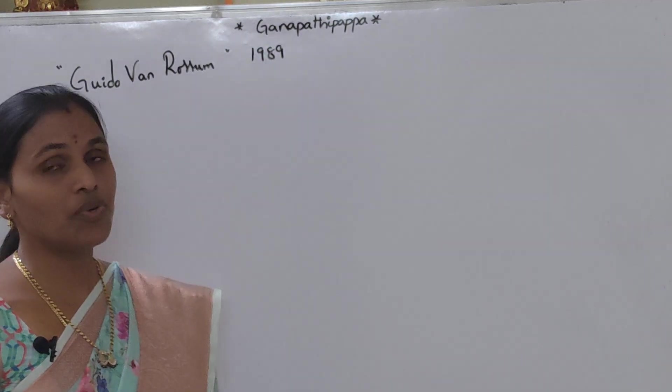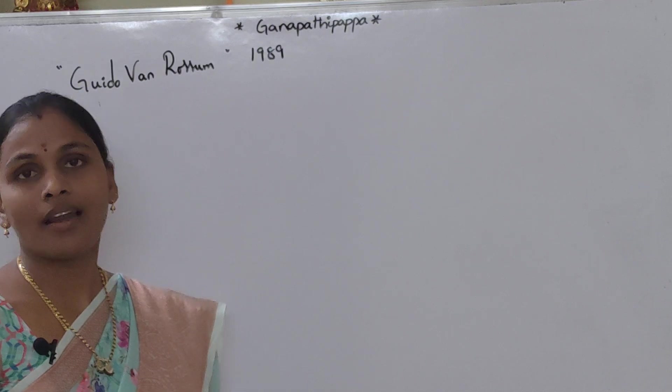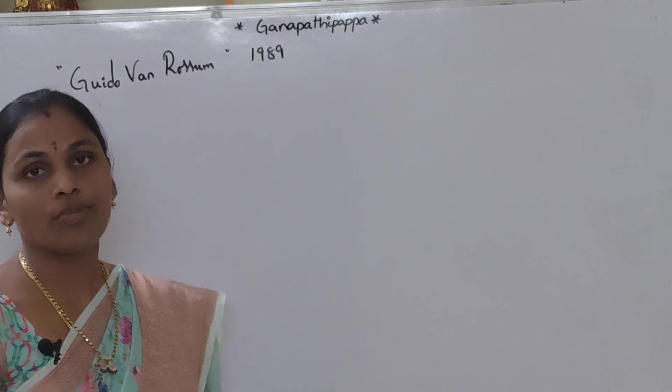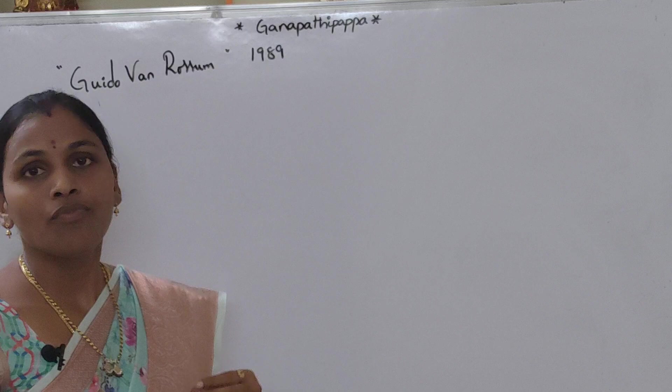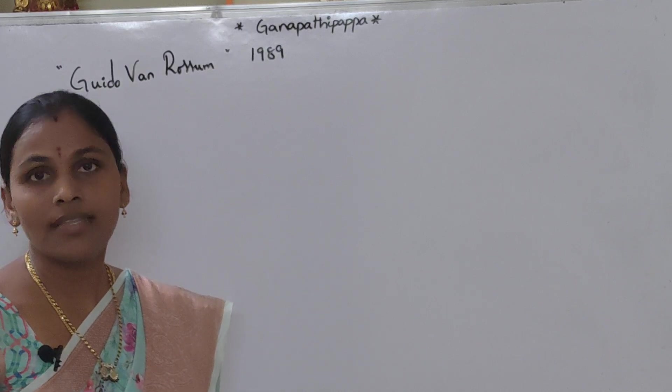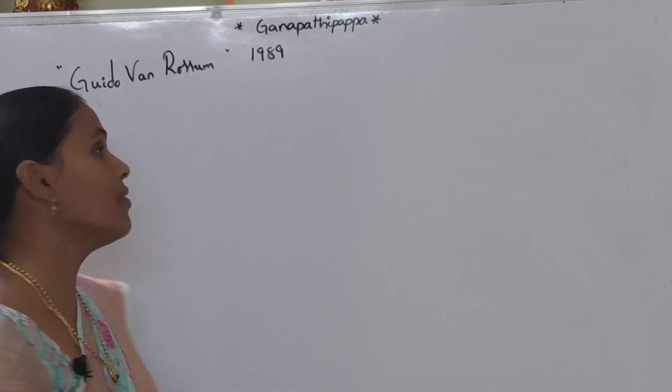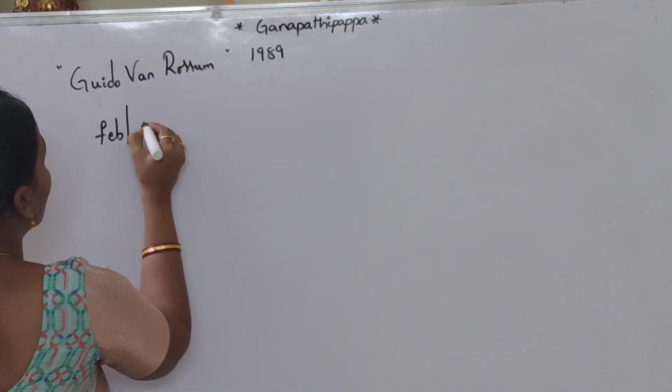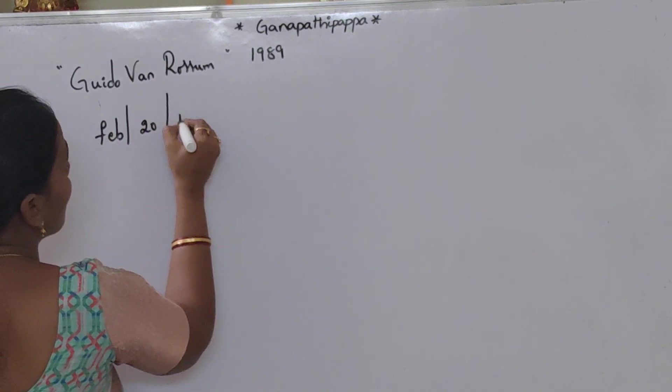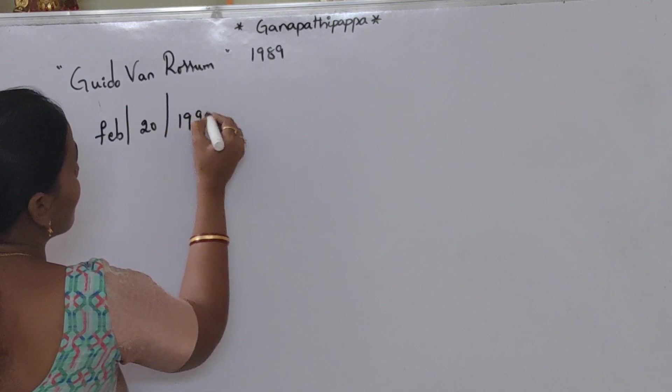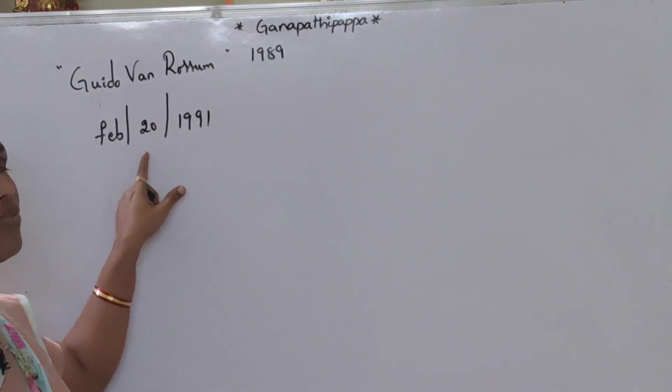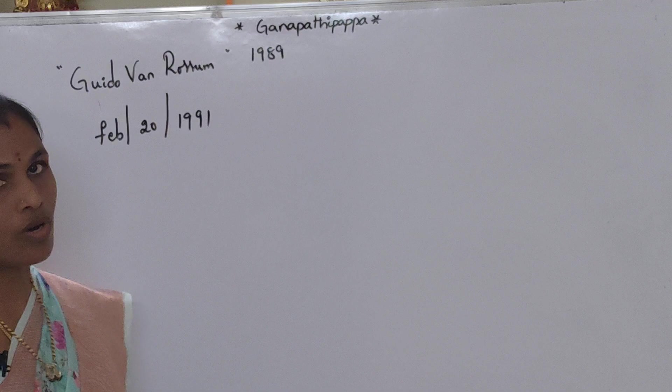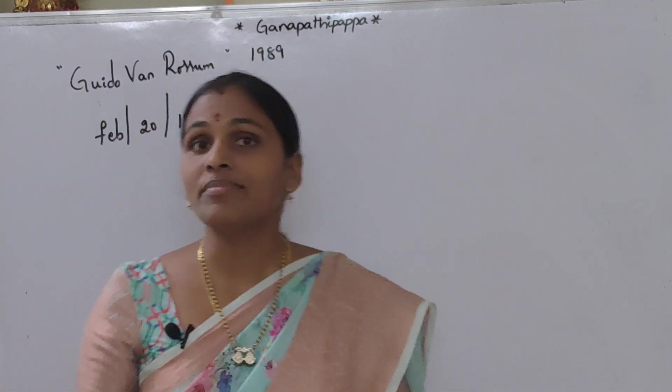While working at National Research Institute in Netherlands, the official date book of Python is February 28th, 1991. February 29th, 1991. This is the official date book of the Python. How is the name selected?